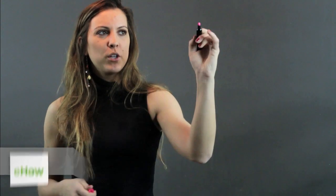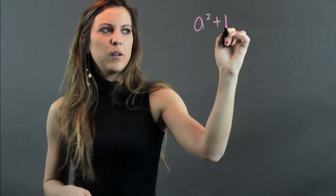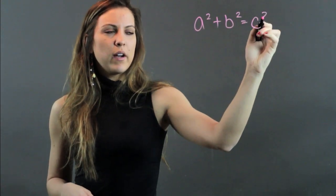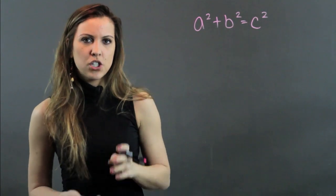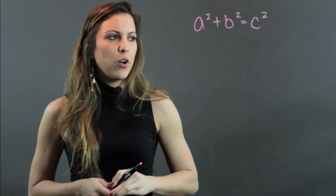So the Pythagorean theorem, which is a squared plus b squared equals c squared, is used in right triangles and it's used to show the relationship between the different sides of a right triangle.